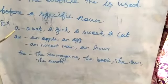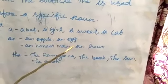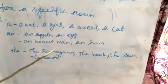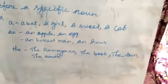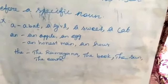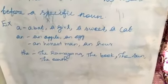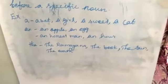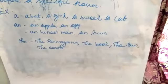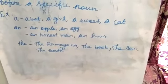Example: an apple, an egg. In another point: an honest man. We say an honest man because the H in honest becomes silent, and the word honest takes the sound as 'honest'.